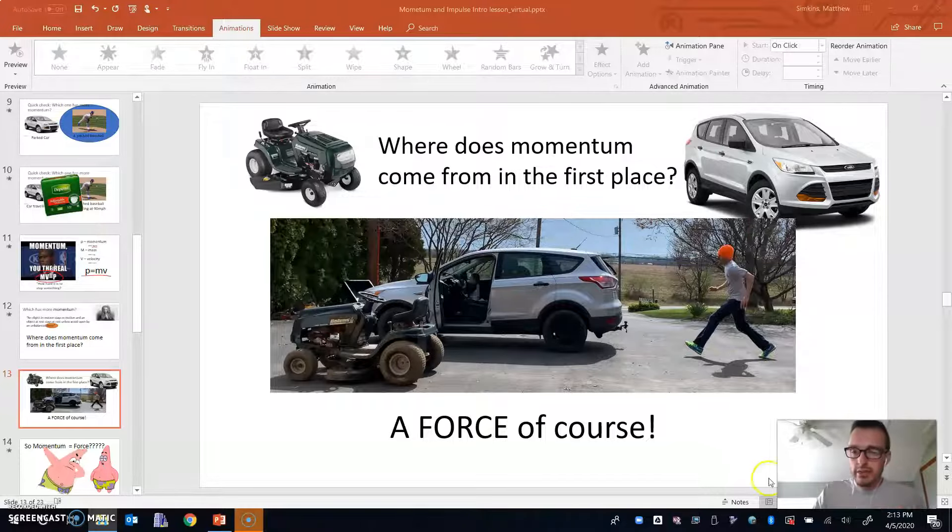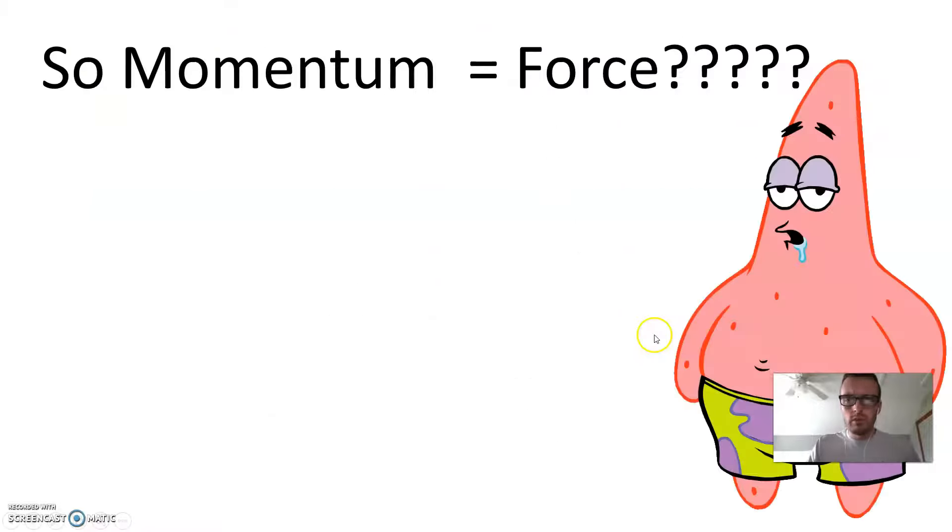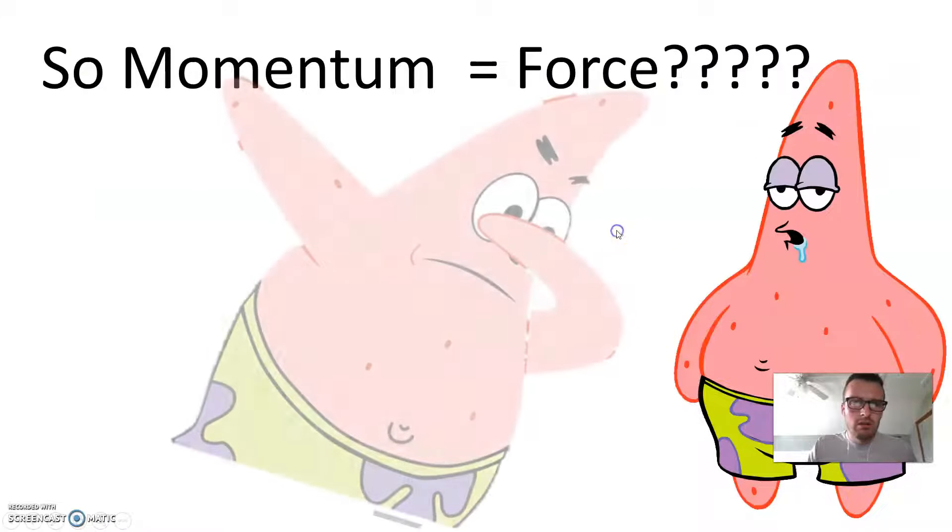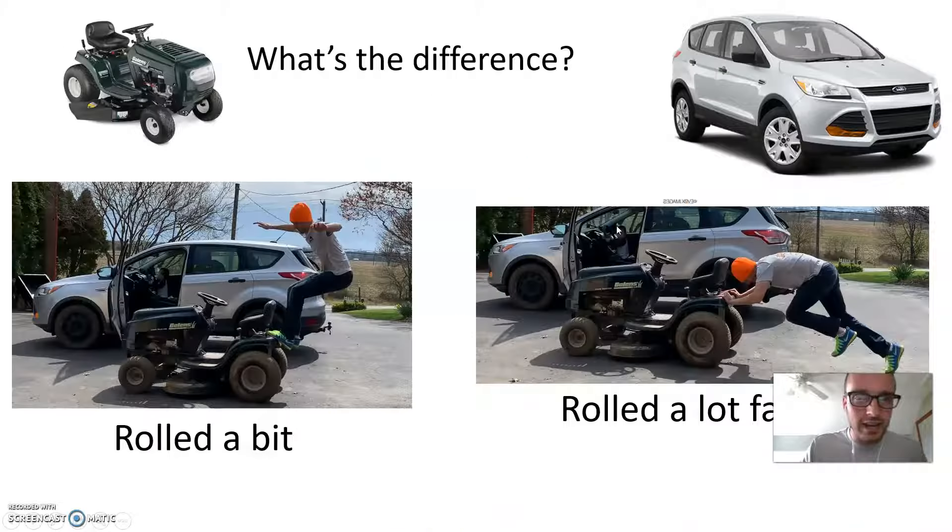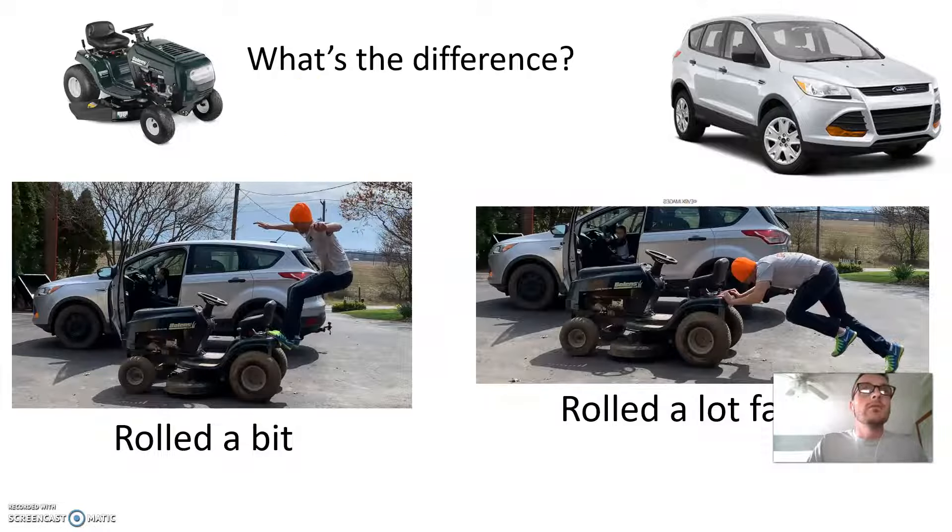The answer is the lawn tractor moves further because the lawn tractor has less mass. So even though it's still the same Simpkins running into it, even though I'm running at approximately the same speed, the force that I am exerting on the lawnmower and the car are probably about the same. But because the car is larger, it resists the change in motion more. So yes, I'm exerting the same amount of force, but it doesn't move as much as the lawn tractor. Most of you could probably predict that and you're like, okay, that's not that hard. So where does the momentum come from in the first place? It comes from a force, of course. If I apply a force, then I get a change into my momentum. So what does that mean? Does that mean momentum equals force? Nah, you played yourself. No, it's not.